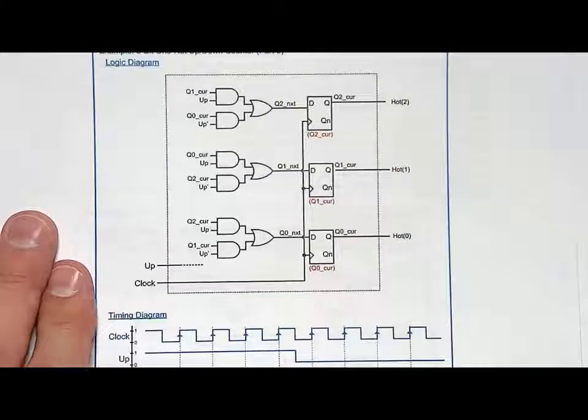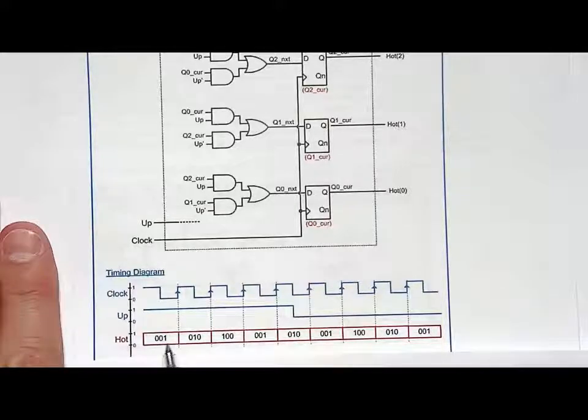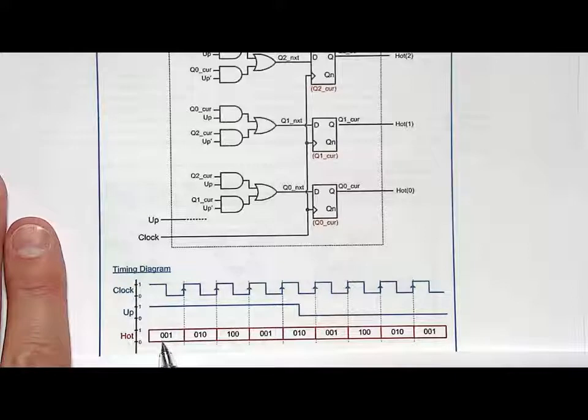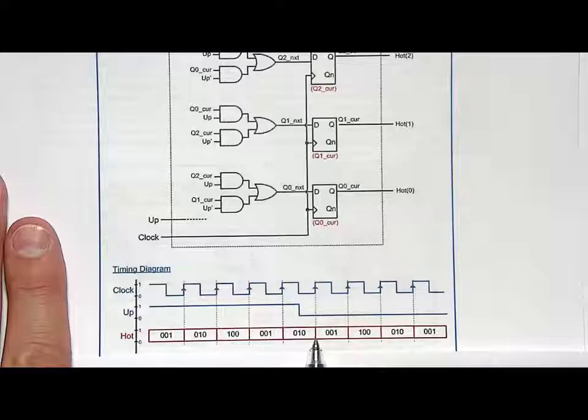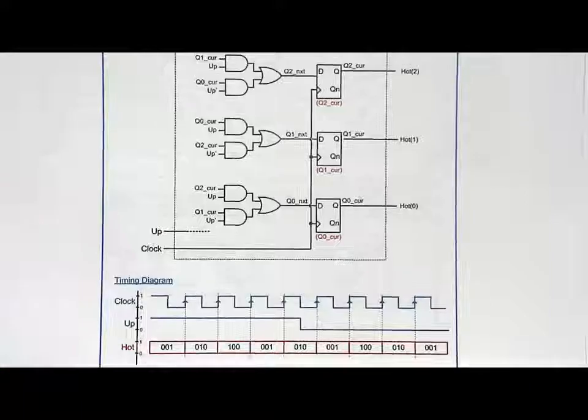Then if you look at how this works, if you look at the timing diagram, when up is asserted, it simply counts up, which we defined as 001, and then 010, and then 100, 001. So the one, the one hot is moving from the least significant position over to the more significant. And then when it goes down, it moves from the most significant to the less significant, the least significant. So it moves the other way. So that is a three-bit one hot up-down counter.